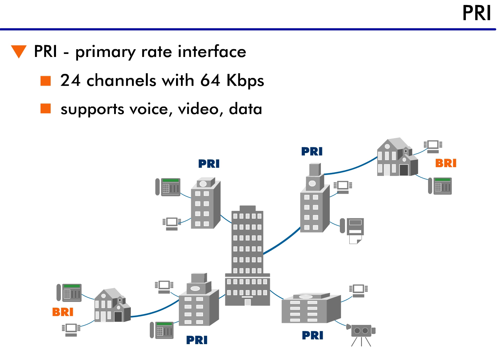By the way, this is only in North America. In the rest of the world, a PRI interface offers 31 separate channels. As with a BRI connection, one of the channels is reserved for signaling, and the remaining channels are available for communication.